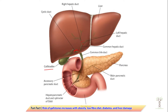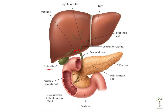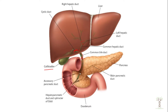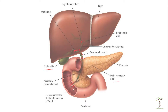Once the gallbladder contracts when food starts to enter the small intestine, bile will move out through the common bile duct, which matches up with the pancreatic duct. This is where the bile and the pancreatic secretions will enter the small intestine.